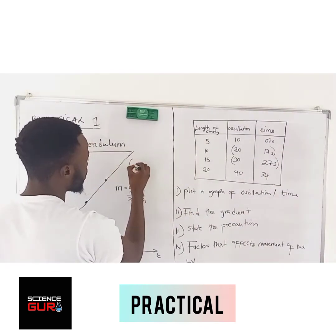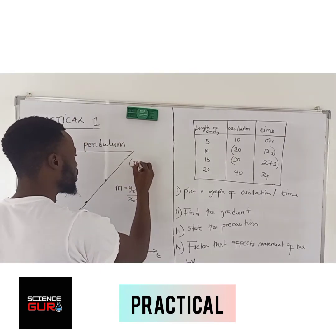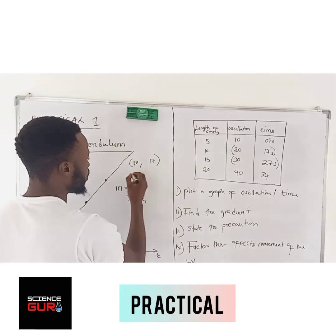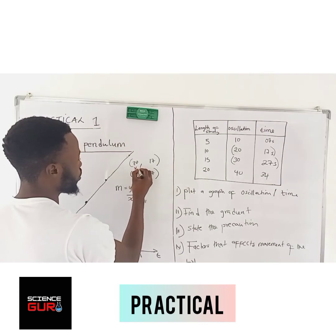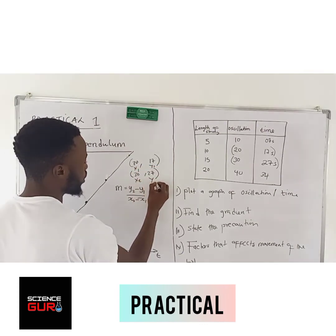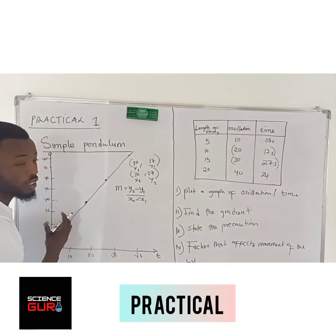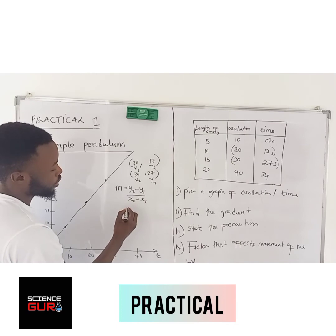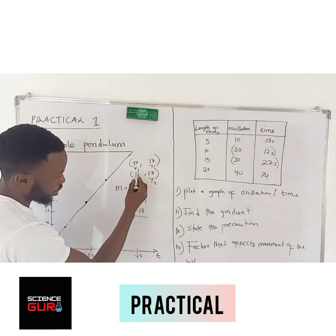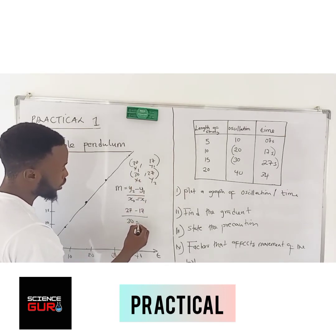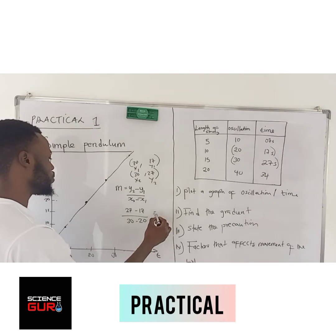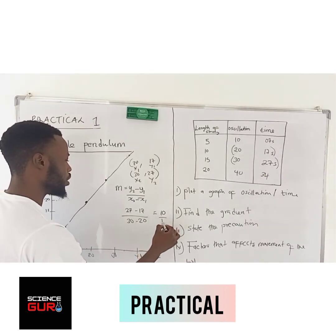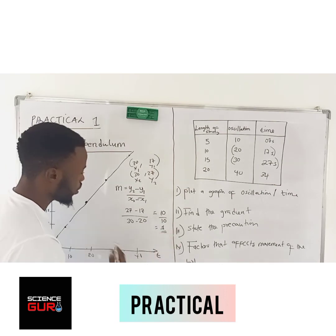It's up to you. So you have chosen 20 comma 17, then you have also chosen 30 comma 27. You label it: this is your X1, Y1, X2, Y2. Then you substitute here and get the final answer. Your Y2 is 27, Y1 is 17. X2 is 30, X1 is 20. You substitute — this gives you 10 over 10. Your gradient is 1. You have found your gradient.